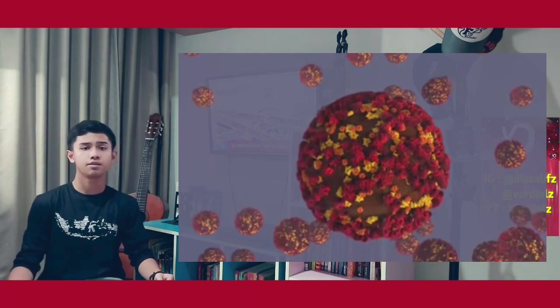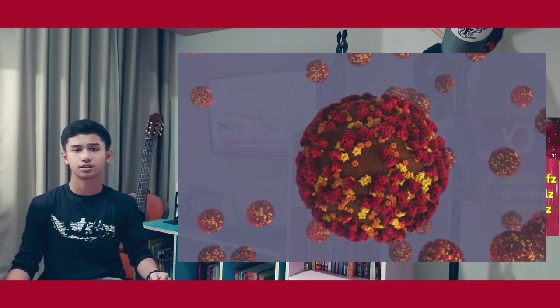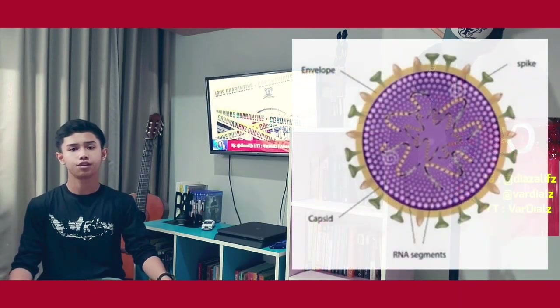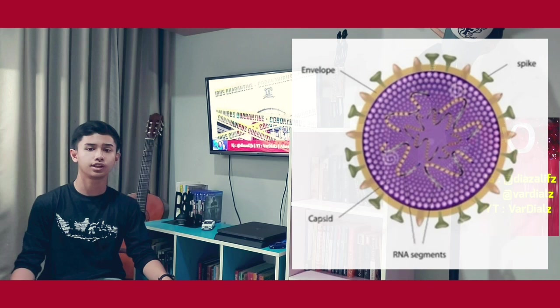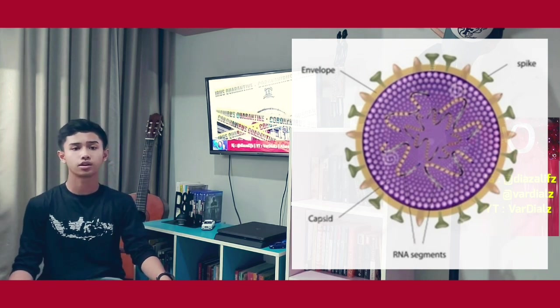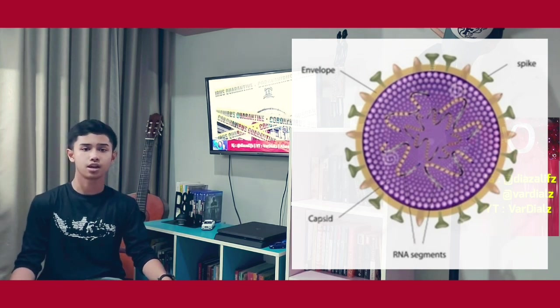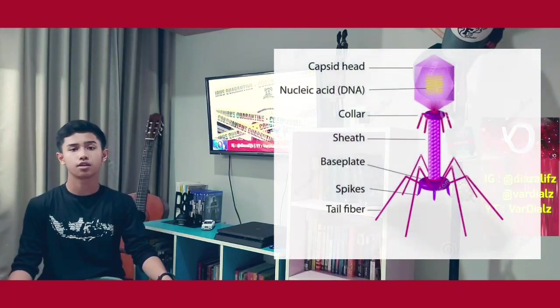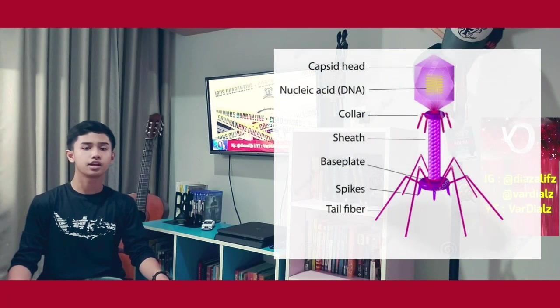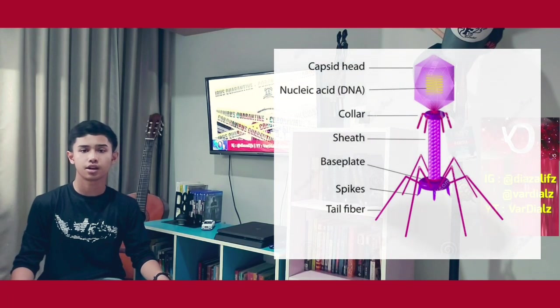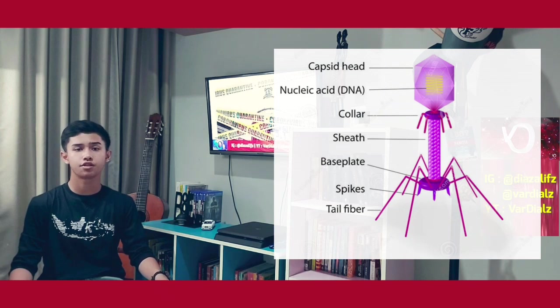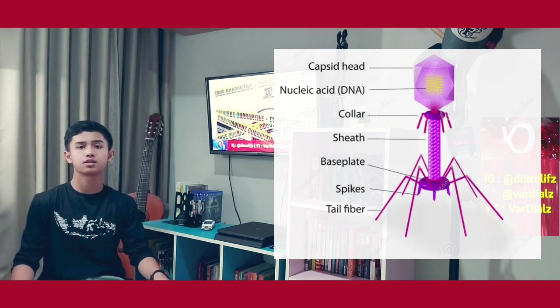Viruses can multiply, but as inanimate objects, they can be crystallized. The next is virus structure. The virus contains nucleic acid or DNA. The capsid is a protein shell which covers the virus. The spike of the virus is what sticks to the body of the host organism.